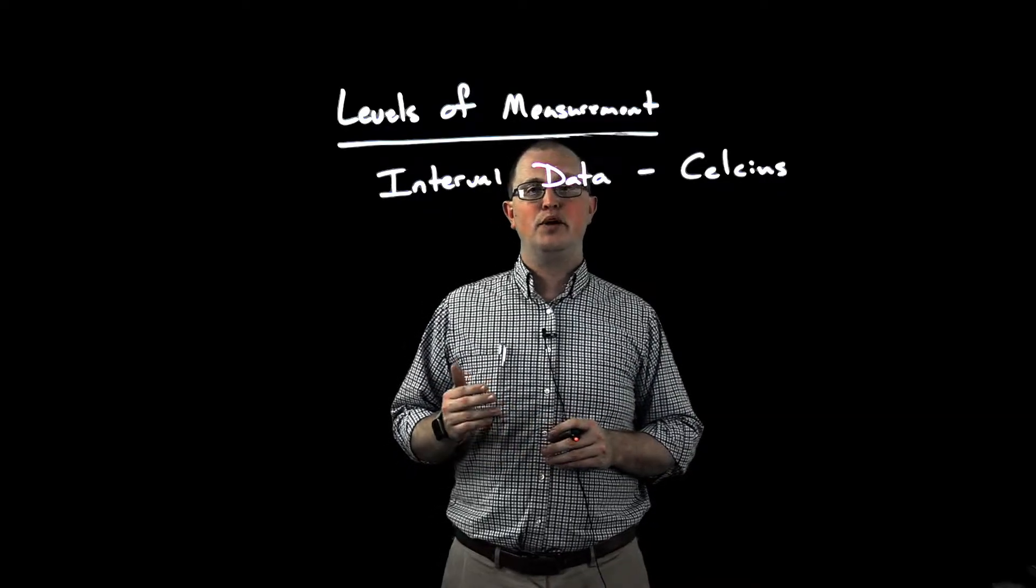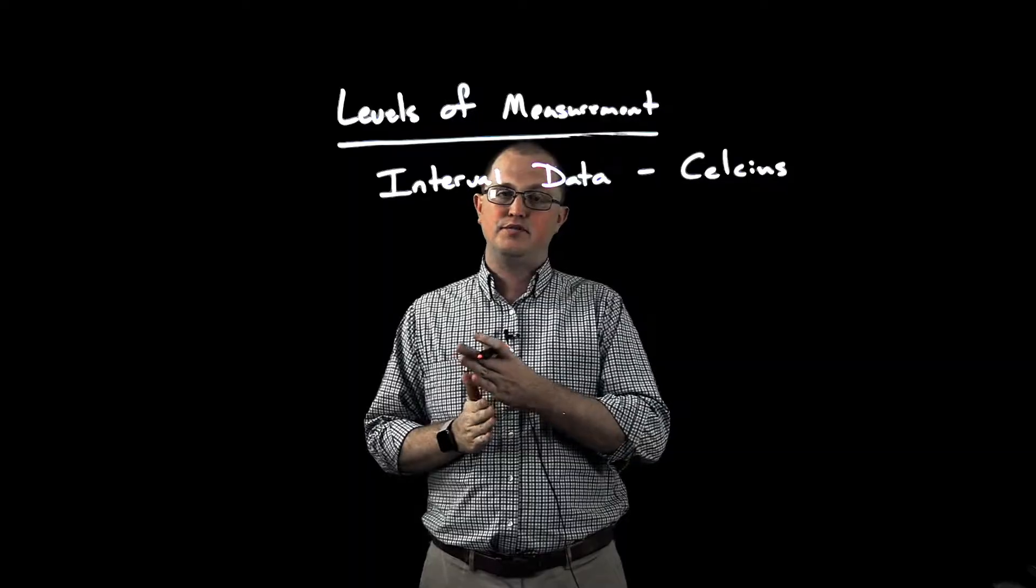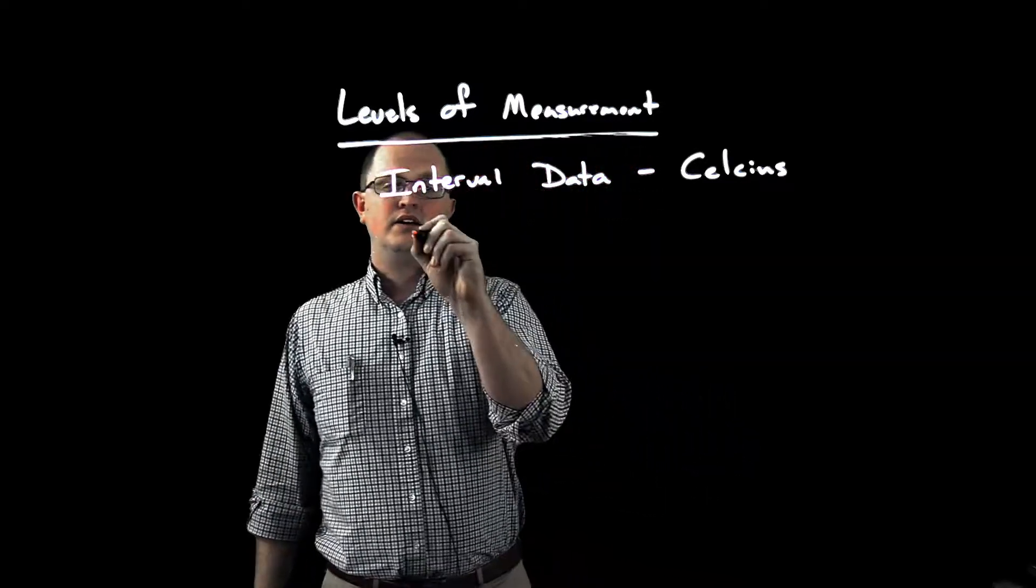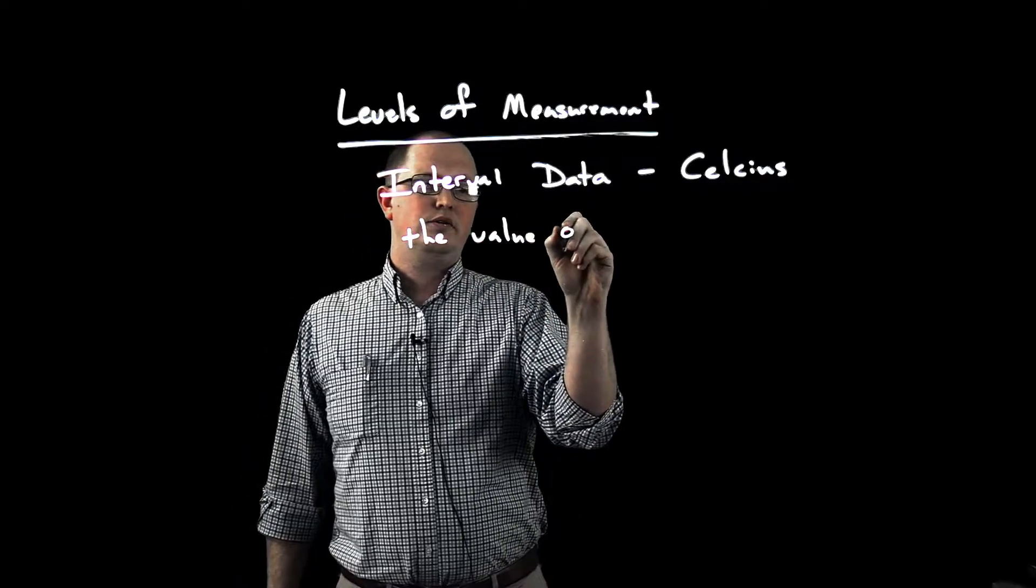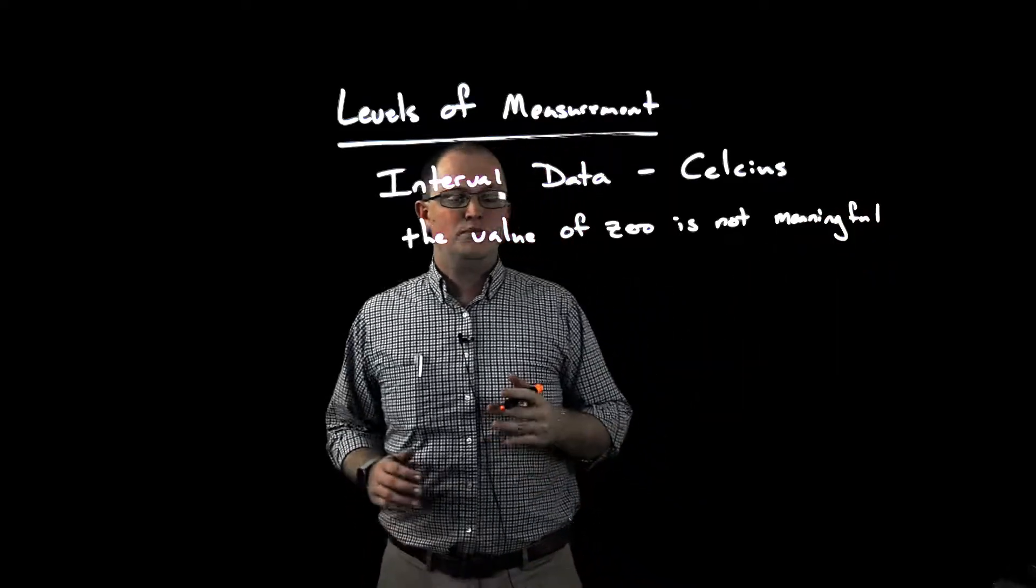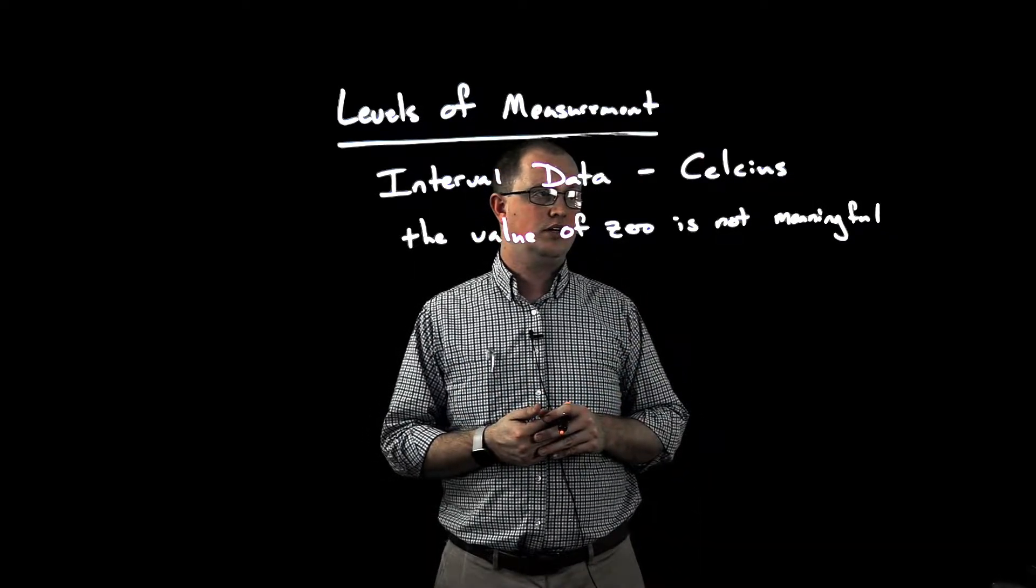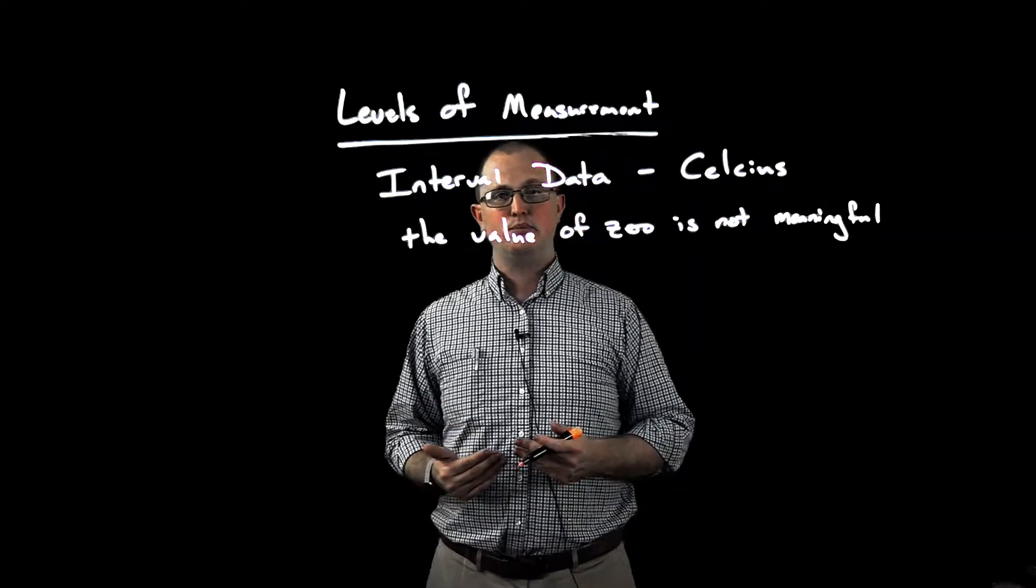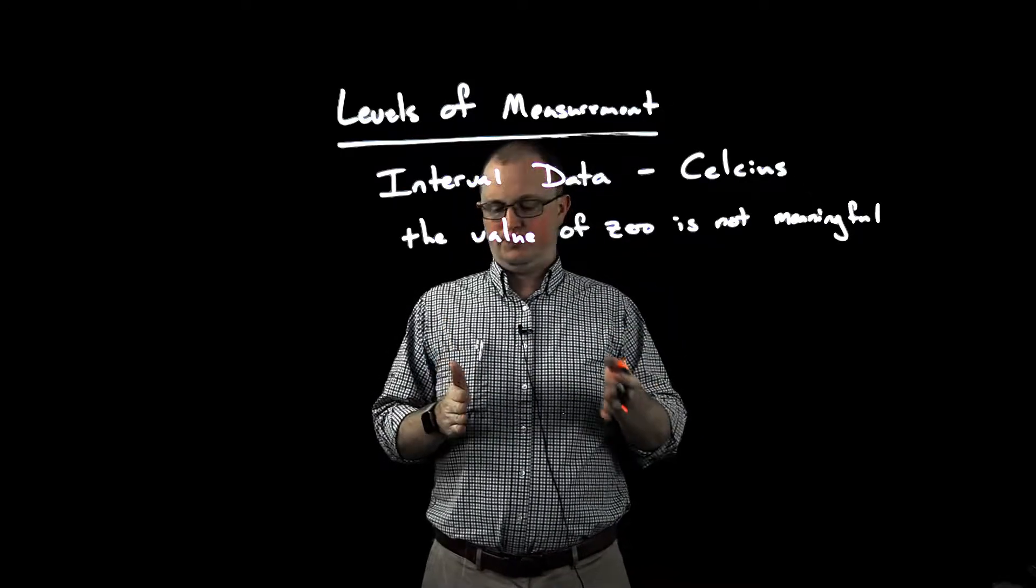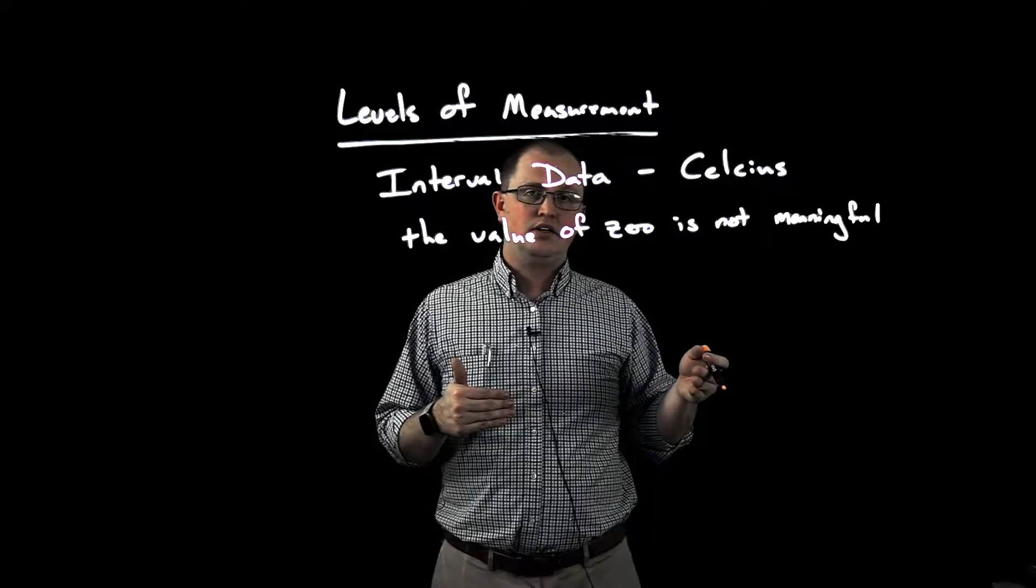However, with interval data, we can't compare ratios of data. We can't say that an object that is 10 degrees Celsius has half as much temperature as an object that has 20 degrees Celsius. And the reason for that is because with interval data, the value of zero is not meaningful. What we mean by that is it has a meaning in the sense that zero degrees Celsius is the freezing point of water, but zero degrees Celsius does not mean the absence of temperature. Not being the absence of temperature means that when we increase from zero degrees Celsius to 10 degrees Celsius, we don't go from no temperature to temperature. And that means that going from 10 degrees Celsius to 20 degrees Celsius doesn't mean a doubling of temperature.